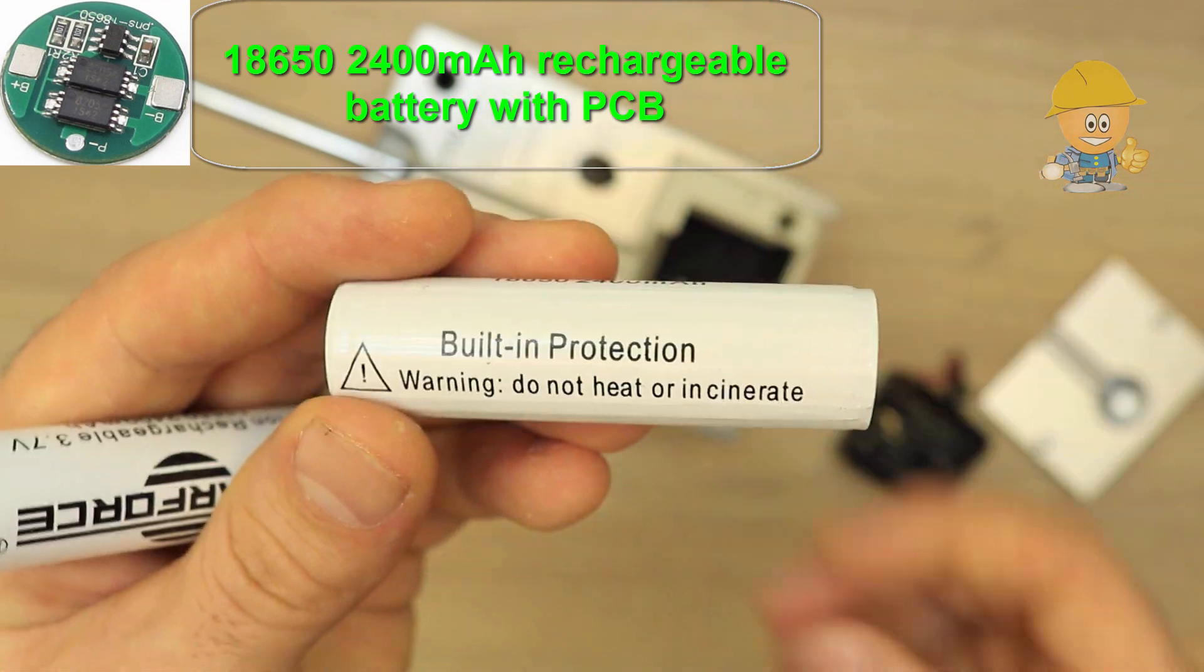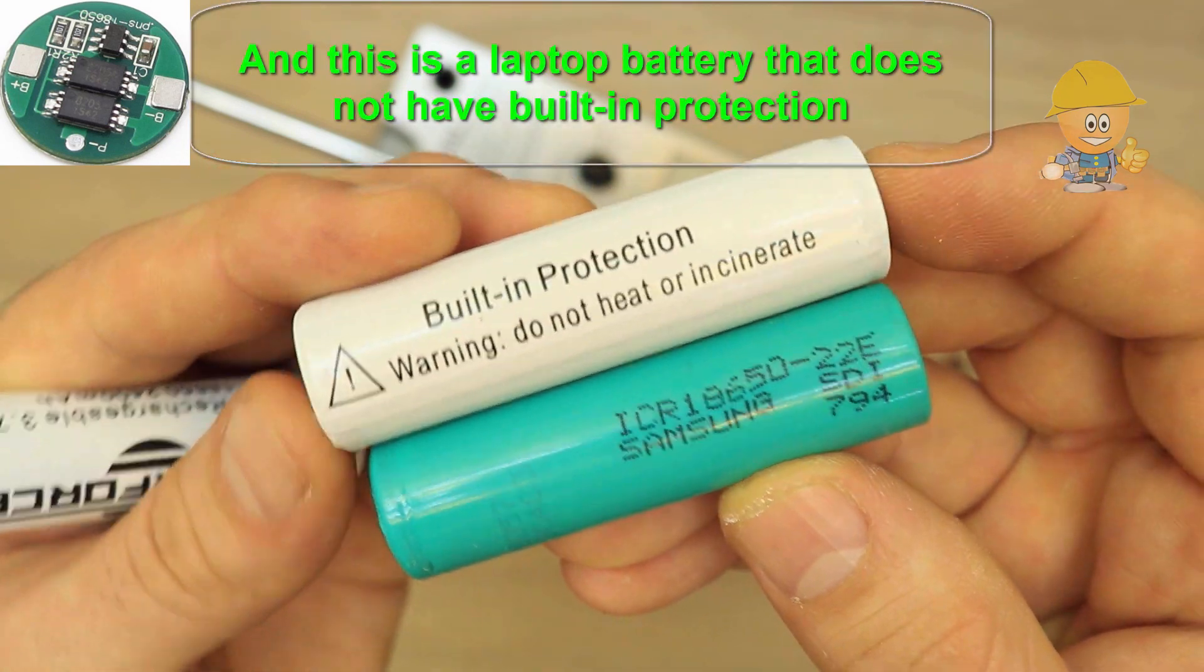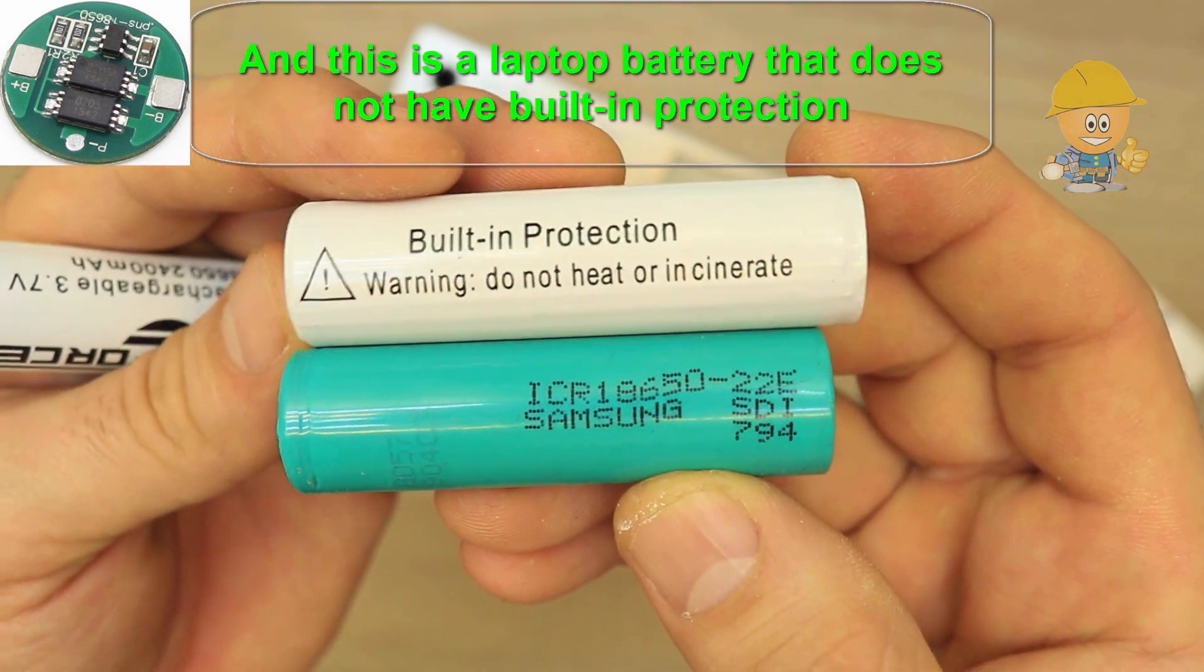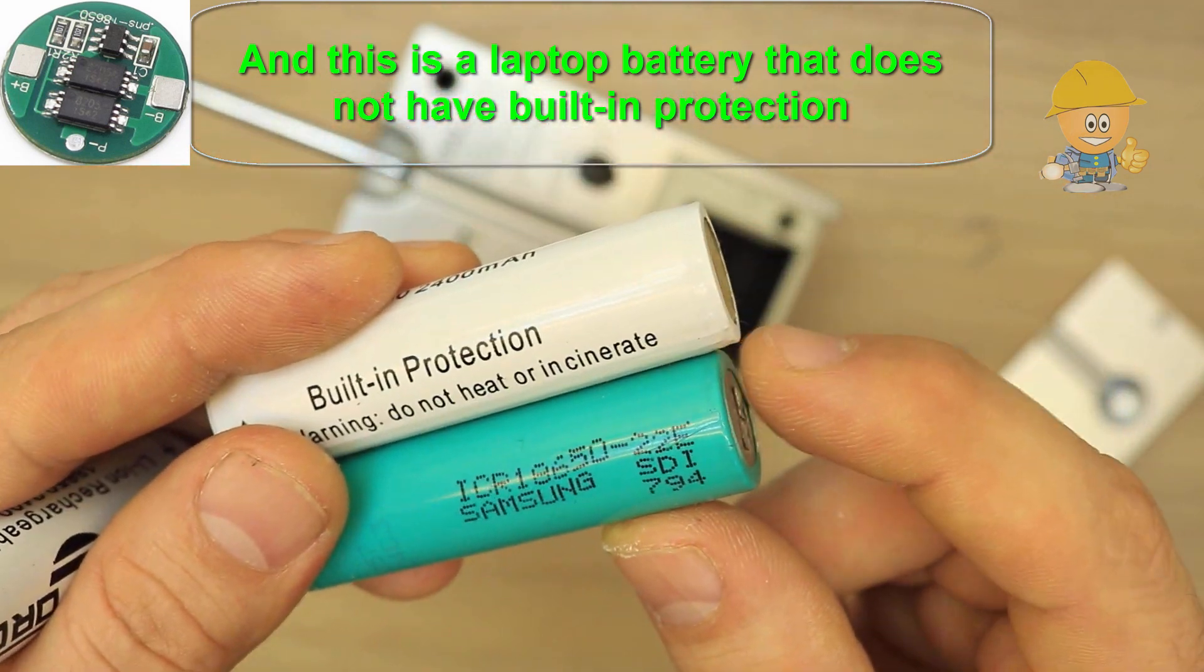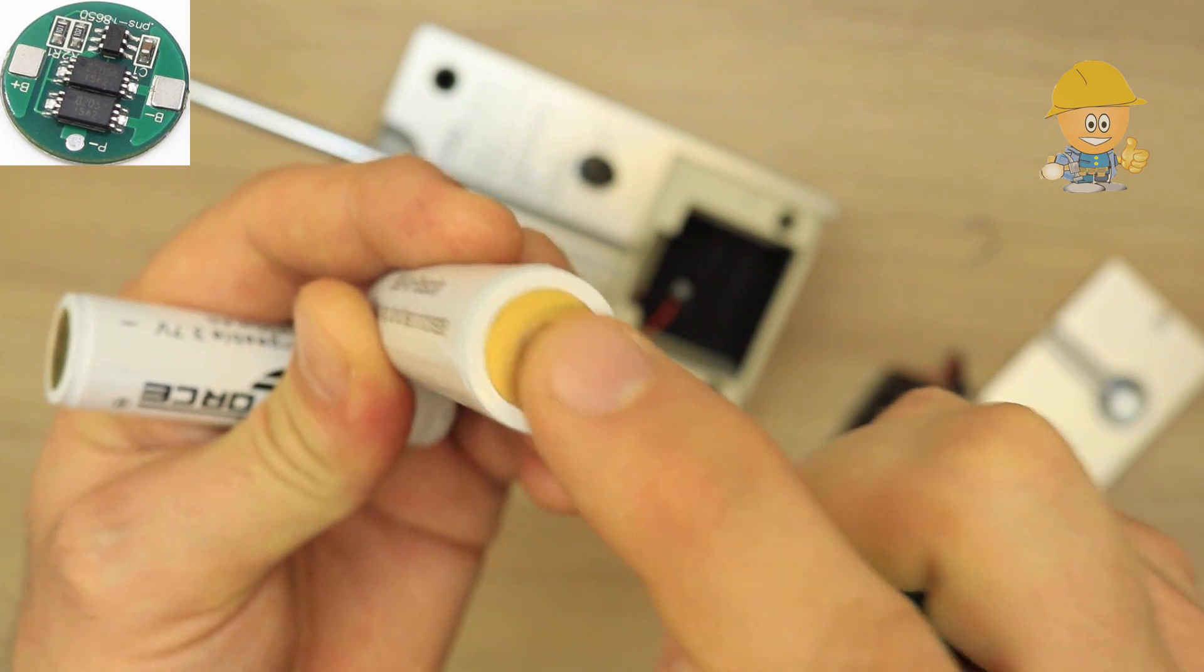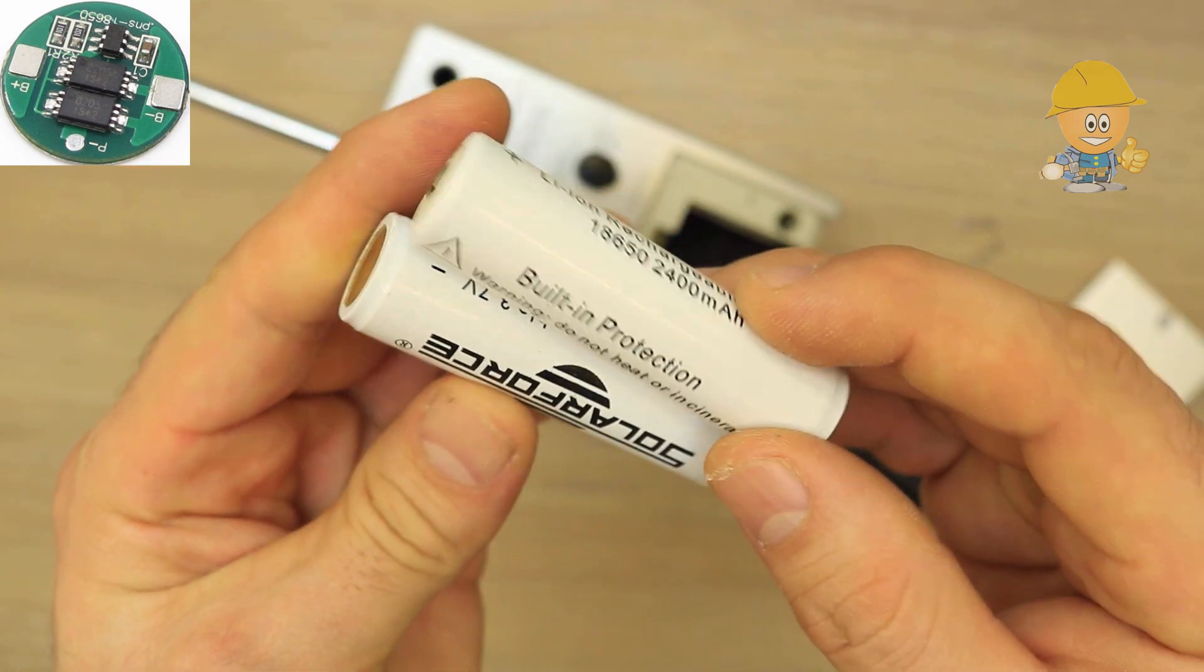Lithium batteries are more special and need protection at discharge and charging. The batteries I use have built-in protection. Compared to the unprotected, it is noticeable that they are longer. If you use lithium cells from a laptop battery, you also need to plug in a battery charger module protection.